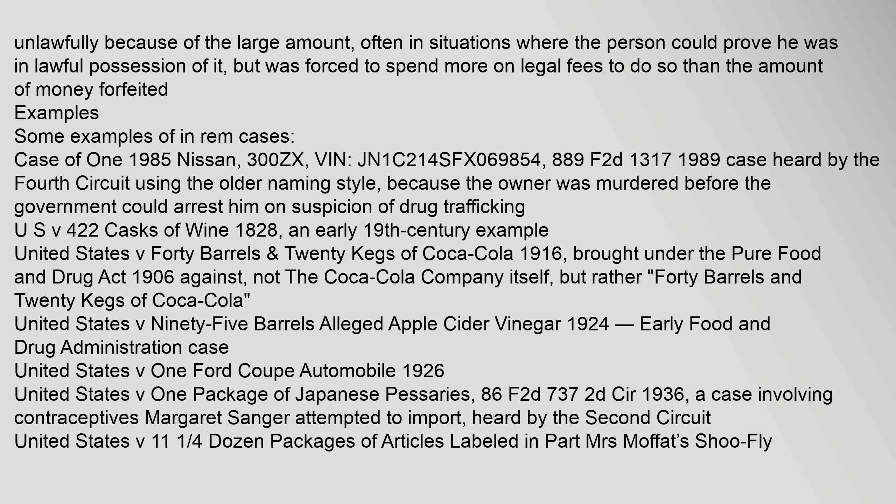Some examples of in Rem cases: Case of 1985 Nissan 300ZX, VIN JN1C214SFX069854, 889 F.2d 1317 (1989) — a case heard by the Fourth Circuit using the older naming style, because the owner was murdered before the government could arrest him on suspicion of drug trafficking. U.S. v. 422 Casks of Wine (1828), an early 19th century example.